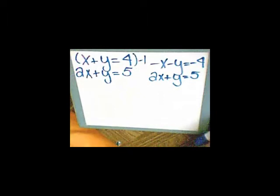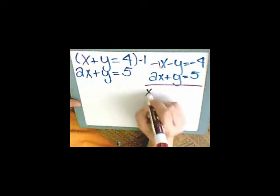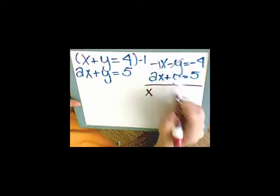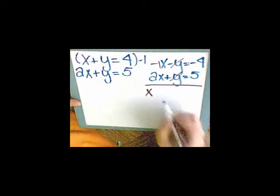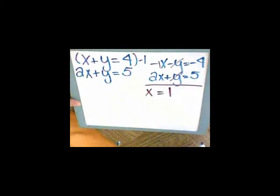So now what happens when I add straight down? Negative 1x plus 2x is x. Negative y plus y is 0. Negative 4 plus 5 is 1. I get x to equal 1.